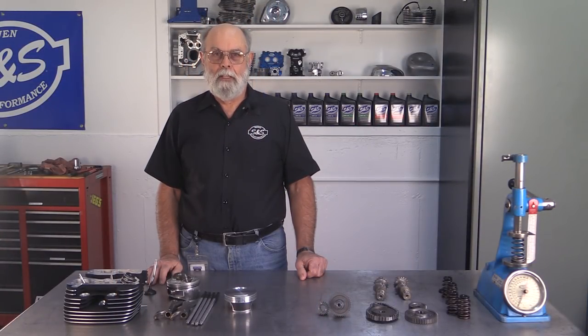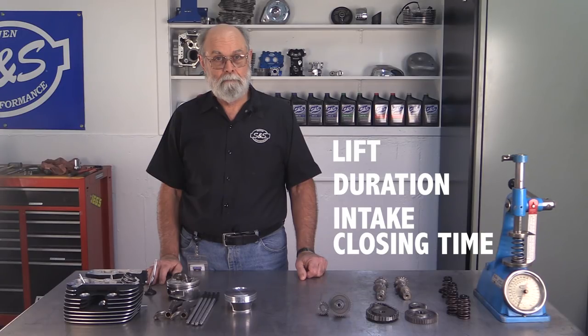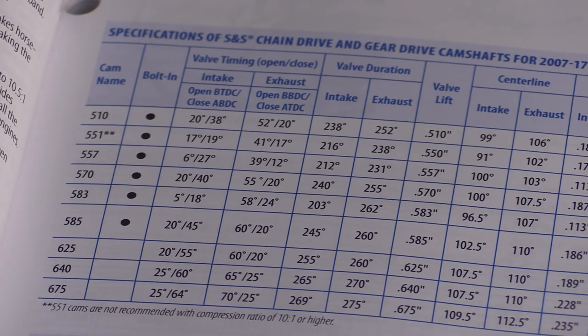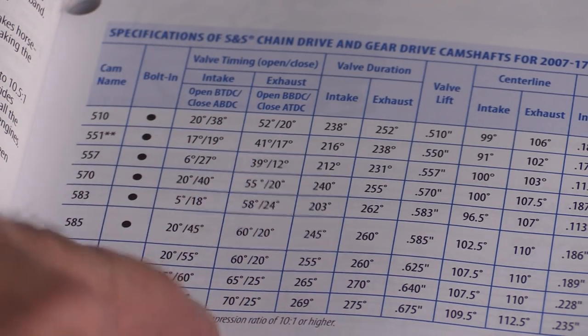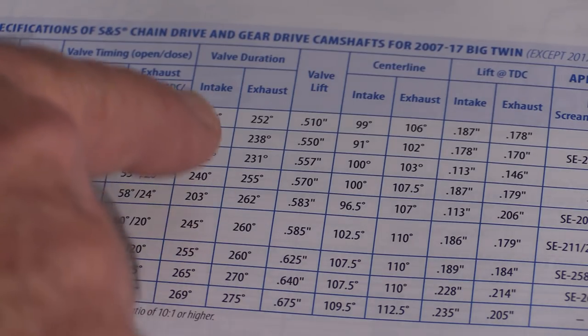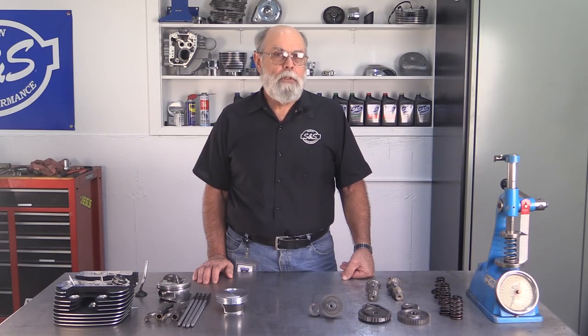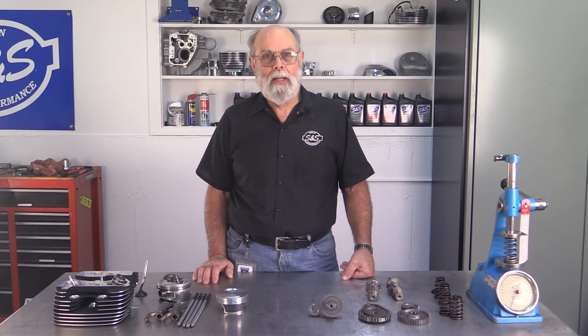We call this video 'the big three' because we'll be explaining the three most important specifications to consider when selecting a camshaft for your engine: lift, duration, and intake closing time. It's not uncommon for riders to look at a chart of cam specifications and just choose the cam with the biggest numbers — bigger is better, right? Chances are with that approach you'll spend a lot of money but won't be very happy with the results. In reality, we make a range of cams for a range of applications. The cam you choose has to be right for your engine and, just as importantly, for your riding style.